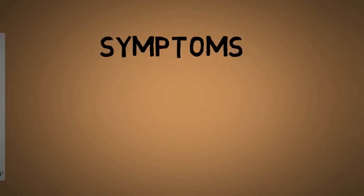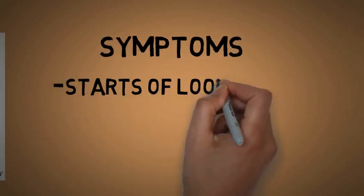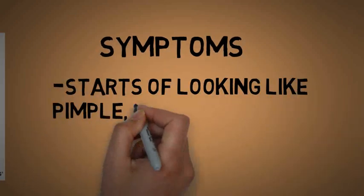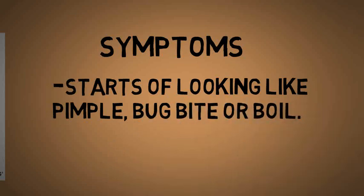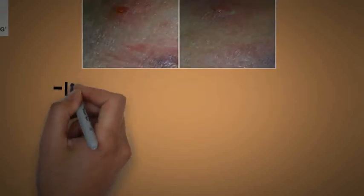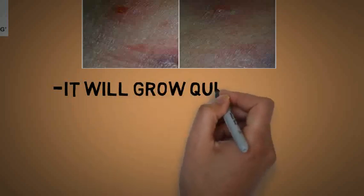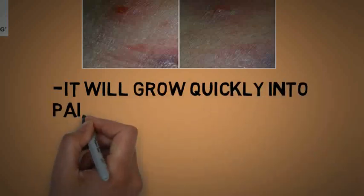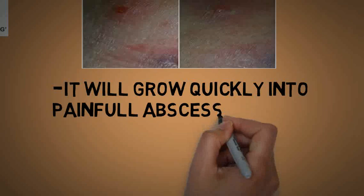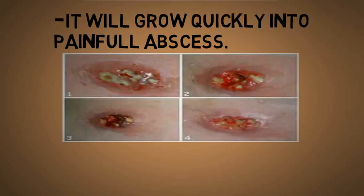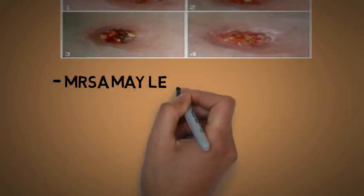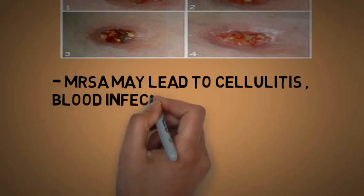A MRSA Staphylococcus infection starts looking like a small pimple, bug bite, or boil, then grows quickly into a painful abscess. MRSA may lead to cellulitis, blood infection, meningitis, or pneumonia.